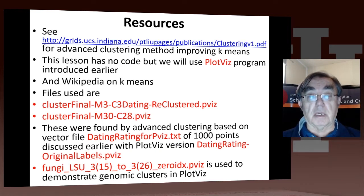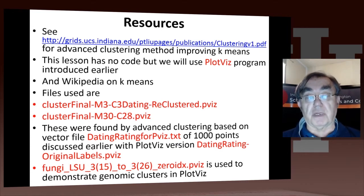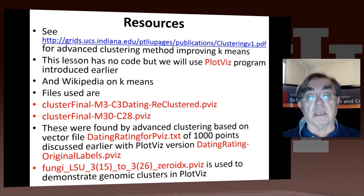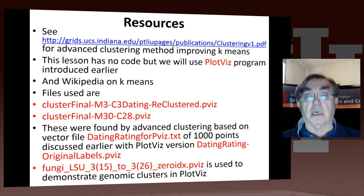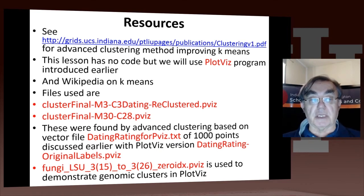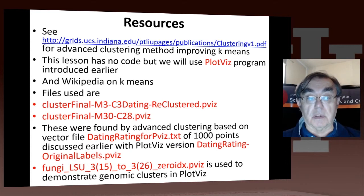Most of our discussion will be in terms of the k-means algorithm, which quite often gives very similar answers to the advanced methods. This particular lesson has no code — the code will come later. But we will use the PlotViz program that we introduced a few lessons ago. We will also look at Wikipedia for their remarks on k-means and heuristics. And there will be some files which we will look at — in particular, four files.